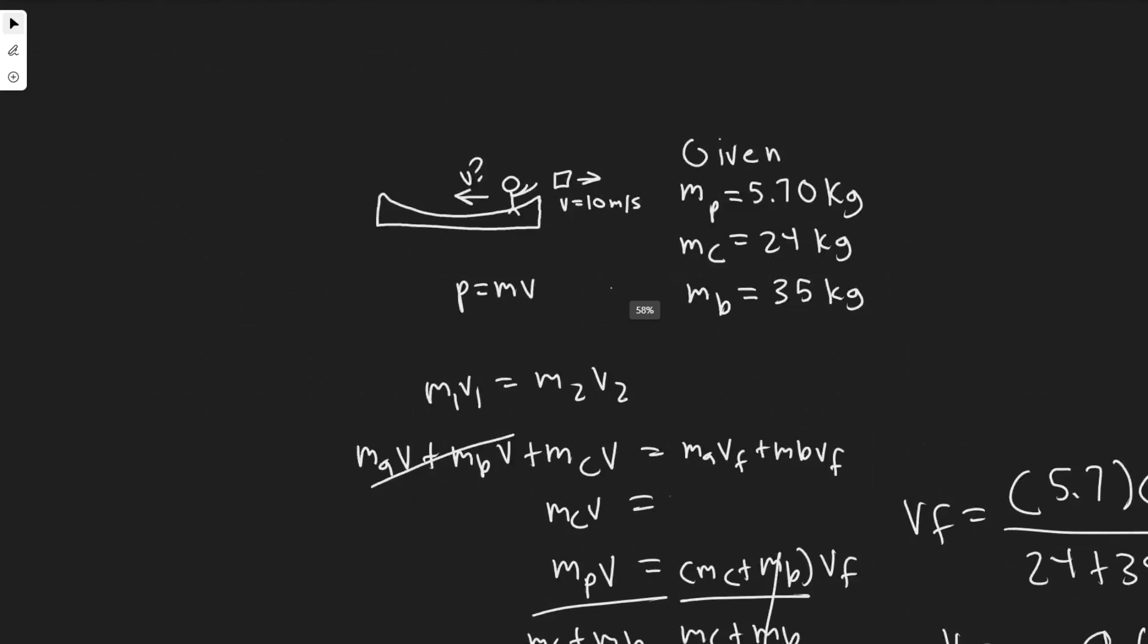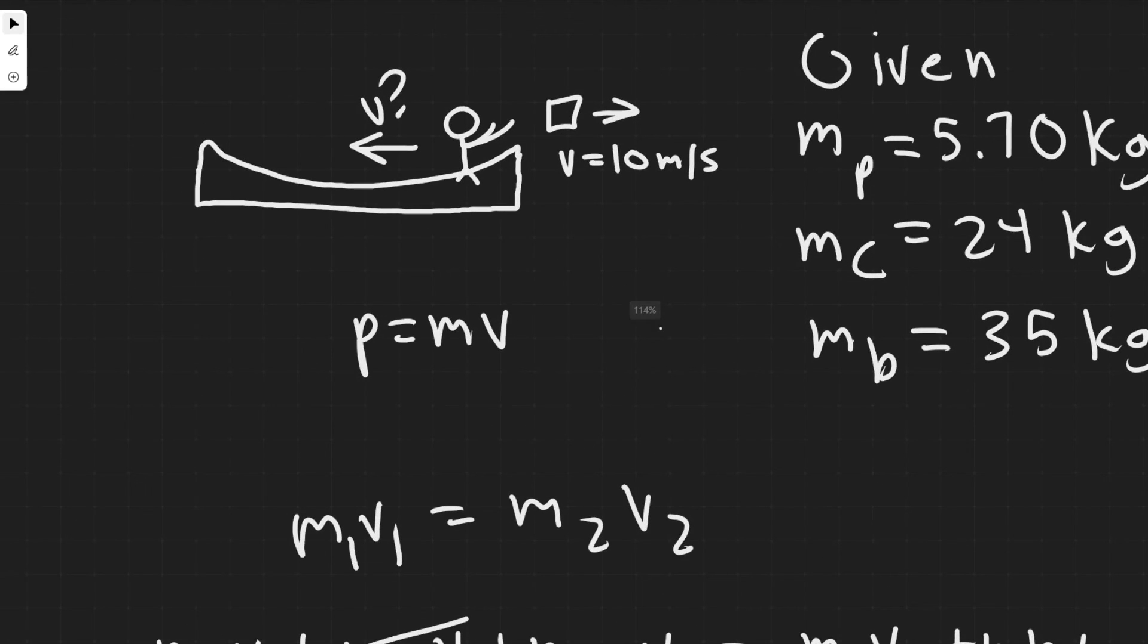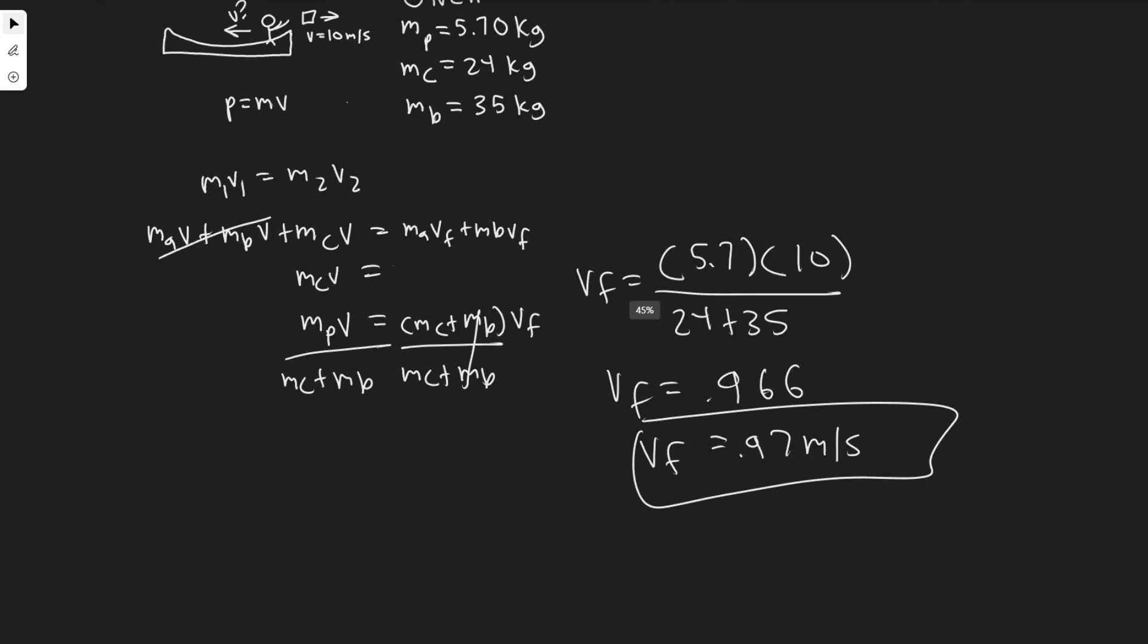So the main takeaway is that when you throw something like this, you're going to travel in the opposite direction and that the momentum from throwing it has to be equal to the momentum after by the law of conservation of momentum. So your answer is going to be 0.97 and hopefully you found this useful.